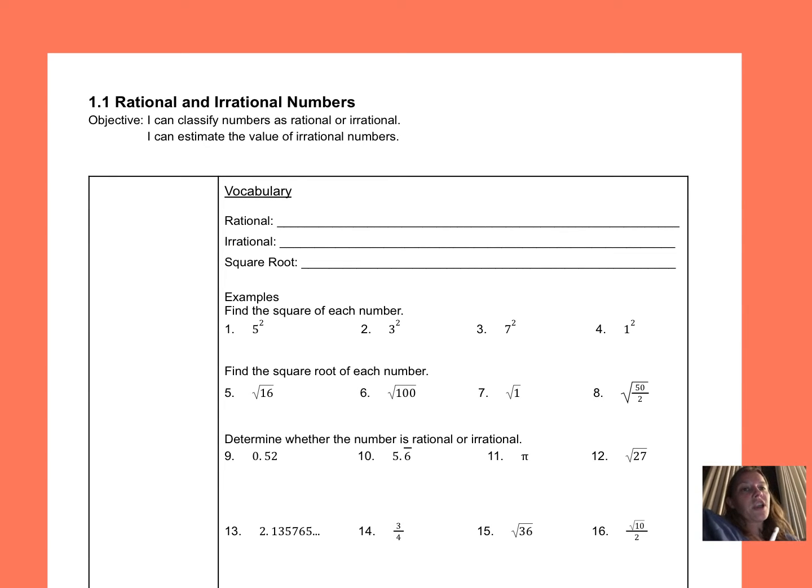For lesson 1.1, we're talking about rational and irrational numbers, being able to identify them, as well as trying to estimate the value of some of our irrational numbers.